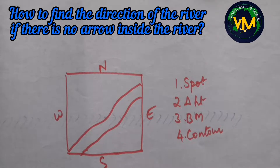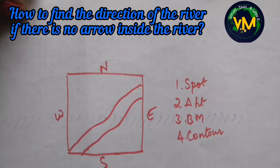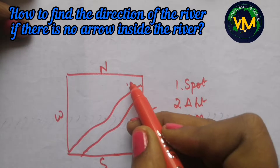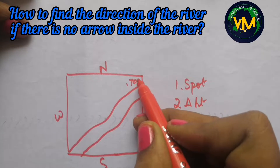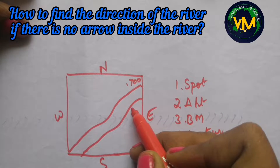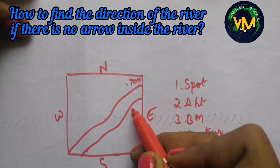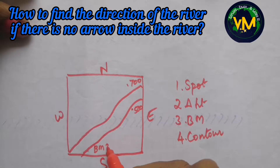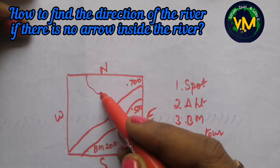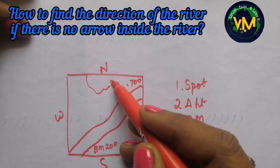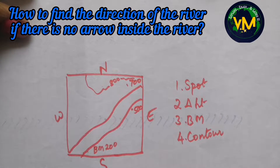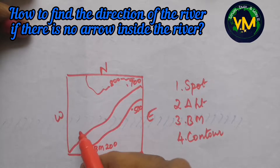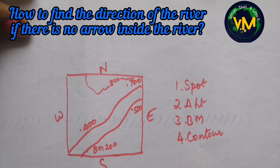Look for all these heights inside the map. Say for example there is 700 here, 500 here, or BM 200 here, and maybe there is a contour line 800 going here. There is another spot height 400 here.